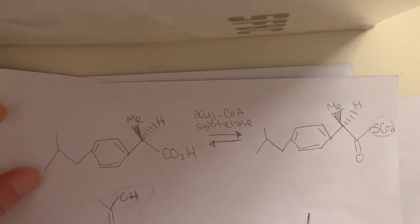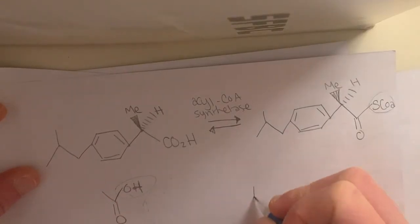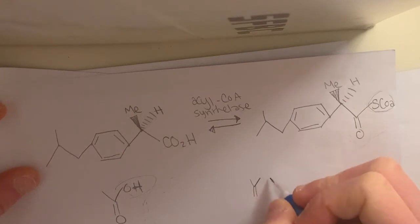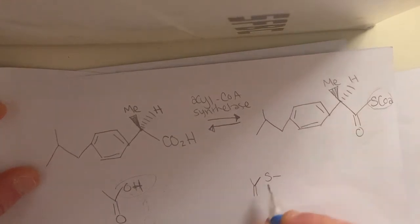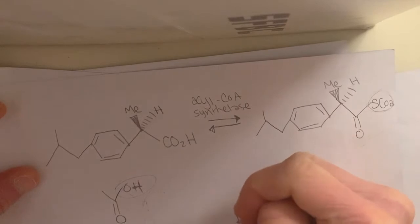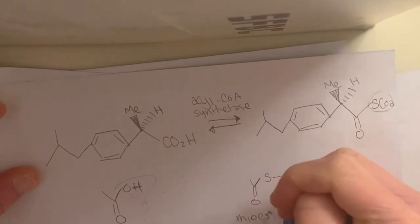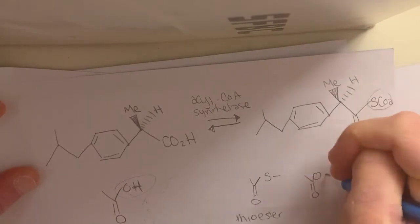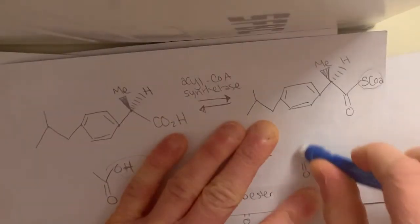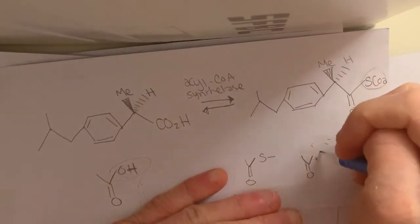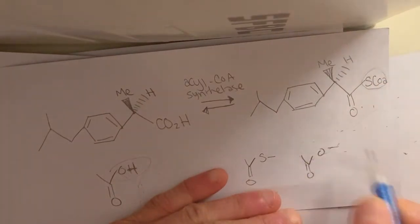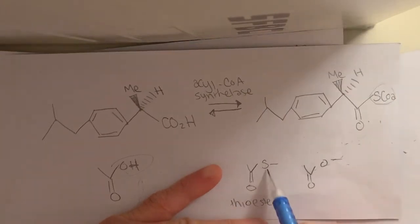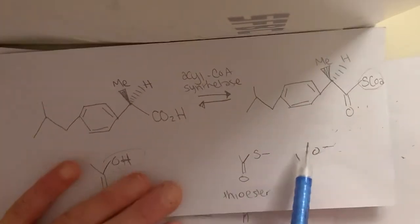And so the est is just, it's attached through this sulfur. So this is what we call a thioester. Where you have like a C double bond O attached to a sulfur. This is a thioester. So an ester is where you have an oxygen attached to like this. So an ester would be the oxygen form of this. A thioester, so thio, that's referring to sulfur. And so this is the sulfur version.